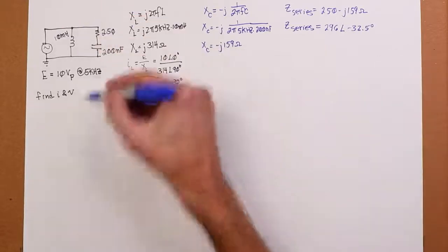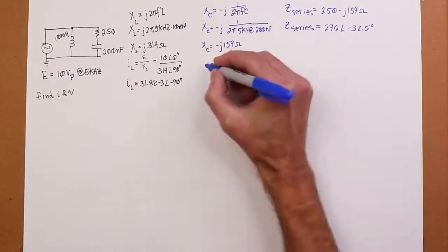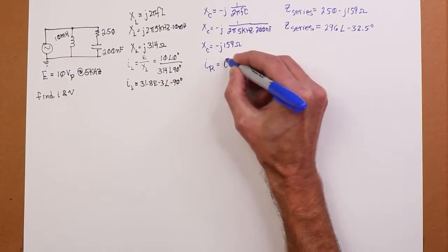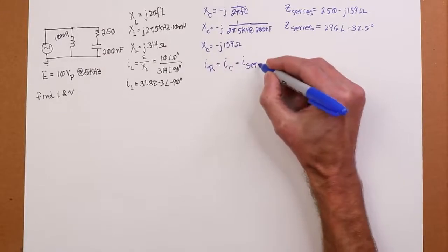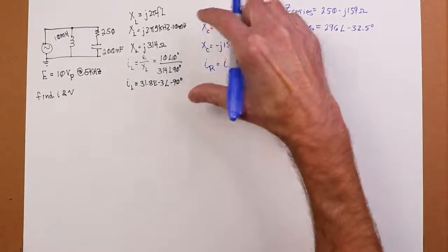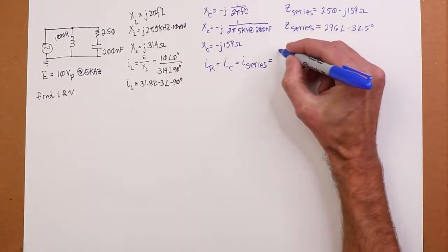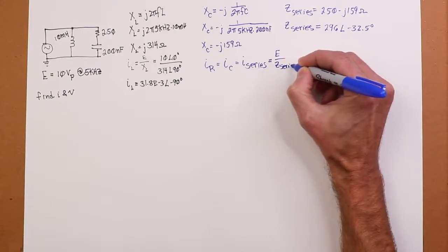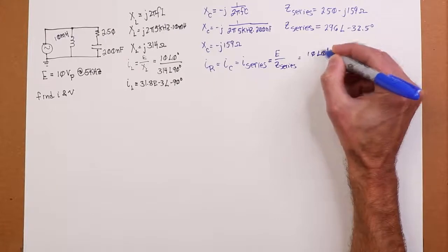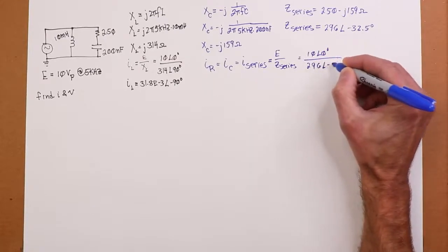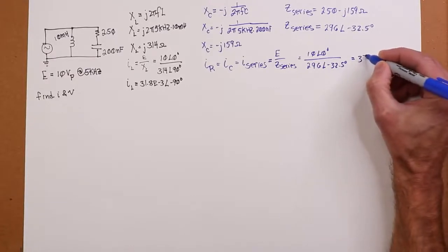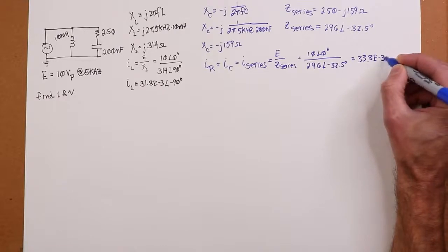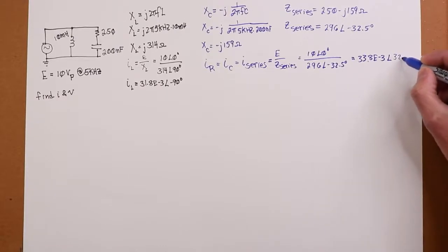So I'll just call that Z series for lack of a better name. And that's just going to be R in series with X sub C. In other words, 250 minus J 159 in rectangular form. We could also write that in polar form. We're going to need it to do the calculation for current in a moment. So we can also write that as 296 at an angle of negative 32.5. Now we do expect this angle to be closer to zero than closer to minus 90, because the resistor is obviously the bigger piece on that.